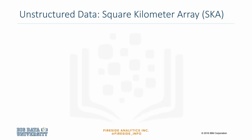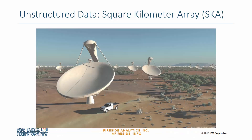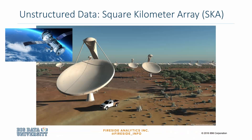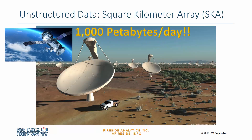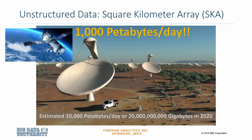A large multi-radio telescope project called Square Kilometer Array, or SKA, produces about 1,000 petabytes of raw data a day as of 2011. It is projected that it will produce about 20,000 petabytes, or 20 billion gigabytes of data, each day in 2020.